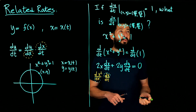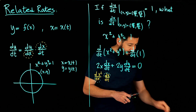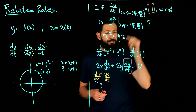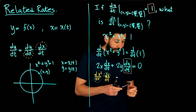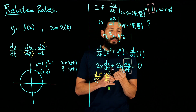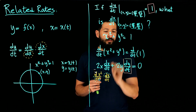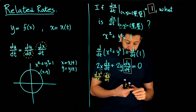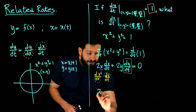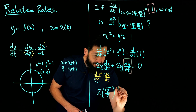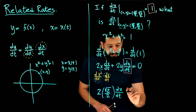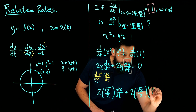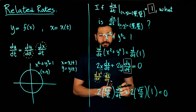Now we plug in the information we know. dy/dt = 1, and both x and y equal √2/2 at our point. So we get 2·(√2/2)·(dx/dt) + 2·(√2/2)·1 = 0.